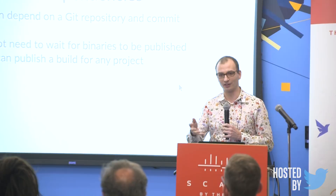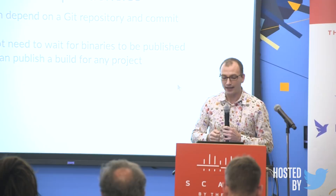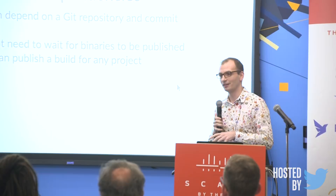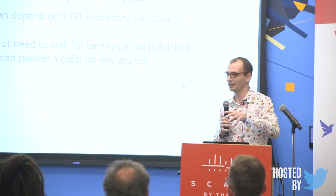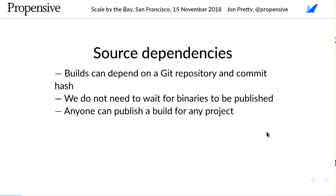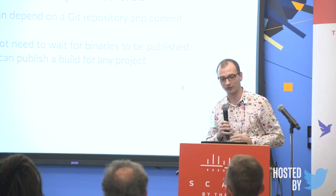Rather than waiting for the project maintainer to go through the quite convoluted process of publishing to Maven Central, anyone can publish — it doesn't have to be the project owner. If you want to publish a build or a variant of another library, you can fork it and take advantage of all the tools that Git provides in your build definitions.